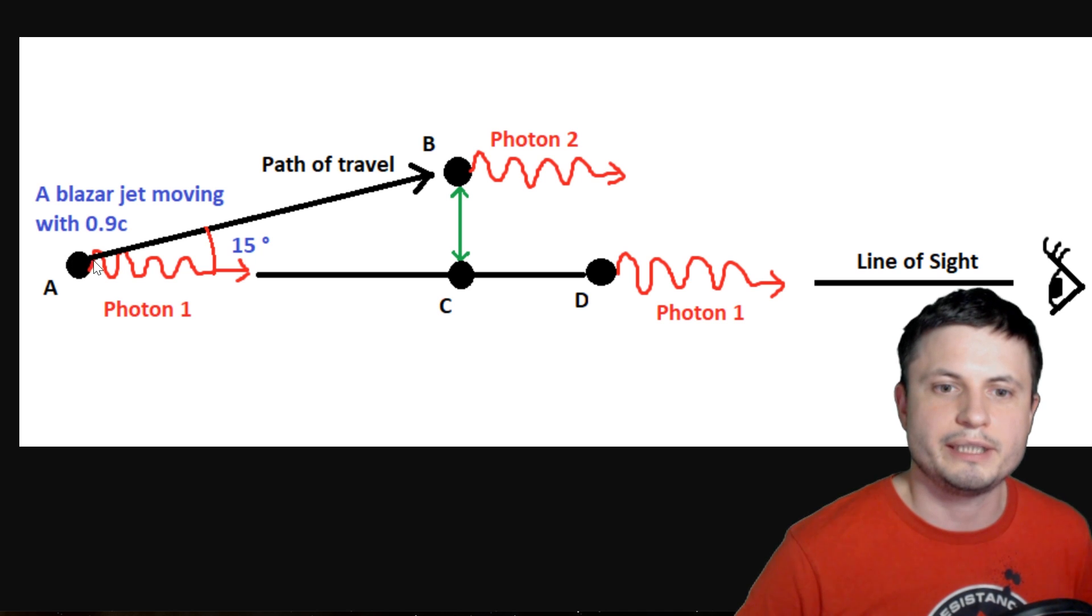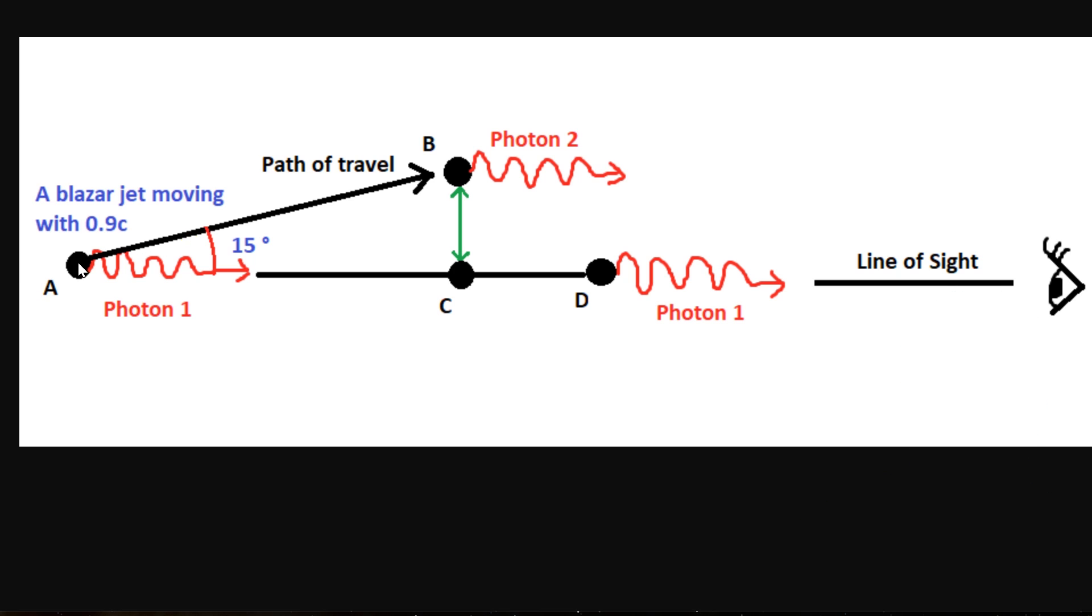This is the black hole, this is the line of sight toward planet Earth, and this is the actual angle of the jet itself. As we know for M87, this speed here is about 0.99 speed of light.